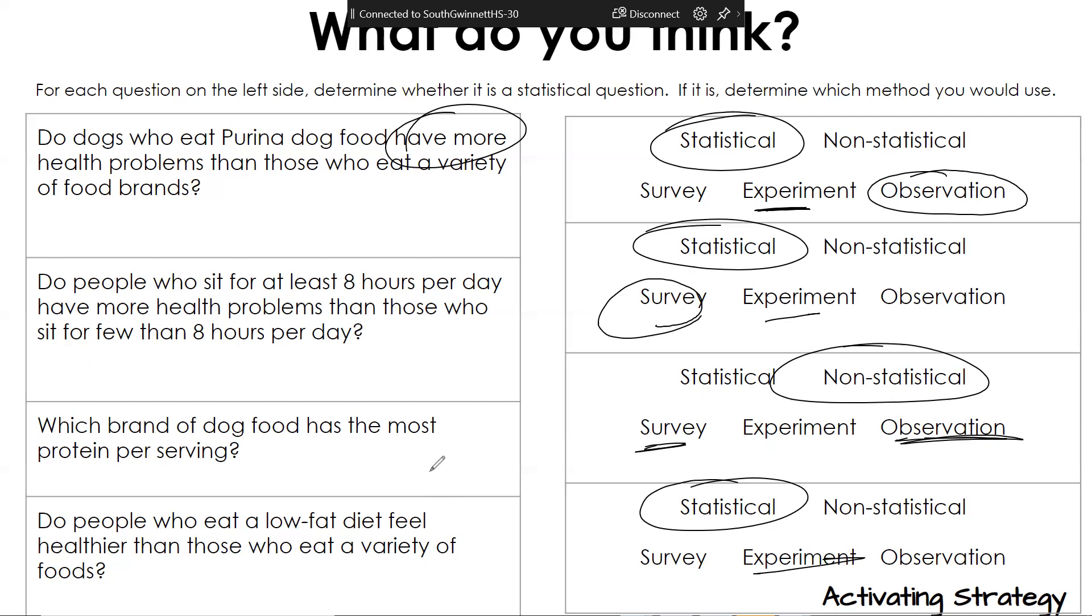All right. Gravy, what did you say? If they look healthier and feel healthier, then when people eat a low-fat diet, they're right. He said one key word. You're going to ask people how they feel. So when we're asking people how they feel, is that a survey, experiment, or observation? Survey.